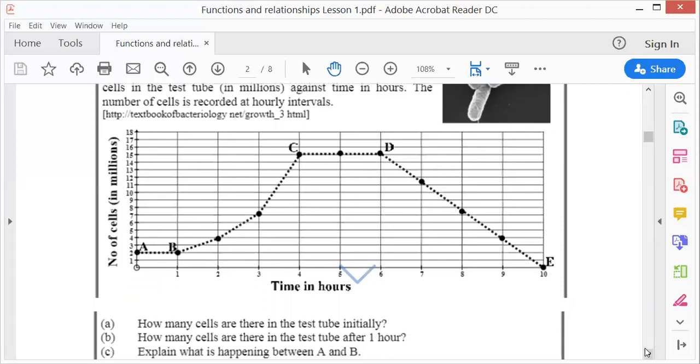Third question: explain what is happening between A and B. If you look at between A and B, people, the graph is not going up, it's not going down. It is running horizontally. So that means time didn't stop, time marched on, but growth did not take place. So in other words, there was no growth between A and B. Only time marched on.